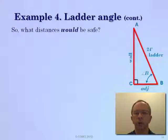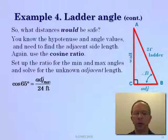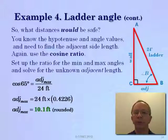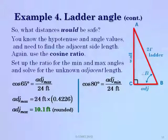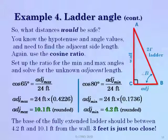So what distances would be safe? Knowing the hypotenuse and angle values, we solve for the adjacent side length using the cosine ratio. For sixty five degrees, the adjacent length is twenty four feet times cosine of sixty five degrees, which is point four two two six, giving ten point one feet as the maximum safe distance. For eighty degrees, the adjacent is twenty four times cosine of eighty, which is point one seven three six, evaluating to four point two four feet. So the ladder could be as close as four point two feet and no farther than ten point one feet from the wall. Unfortunately, three feet is just too close.